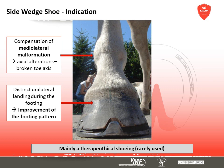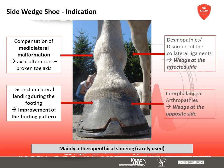Another main indication is a distinct unilateral landing combined with tipping of the hoof during the footing. A side wedge shoe is said to minimise this effect and correct the individual pattern towards planar footing. By changing the angle of hoof and coffin bone, one can also influence the joint space symmetry, which can be helpful when treating unilateral arthropathies or lesions of a collateral ligament.